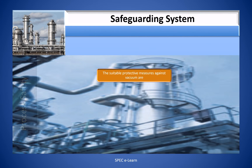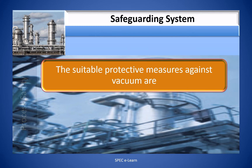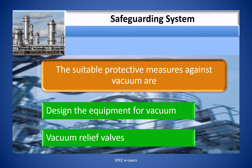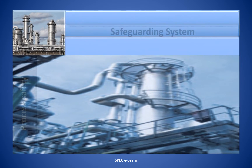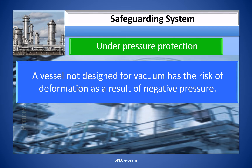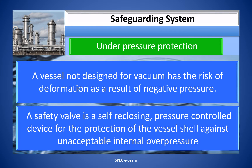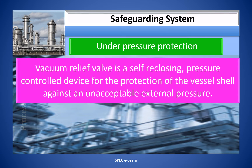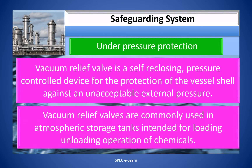Suitable protective measures against vacuum include designing the equipment for vacuum and vacuum relief valves. A vessel not designed for vacuum has the risk of deformation as a result of negative pressure. A safety valve is a self-reclosing pressure control device protecting the vessel shell against unacceptable internal over pressure. A vacuum relief valve is a self-reclosing pressure control device protecting the vessel shell against unacceptable external pressure, and is commonly used in atmospheric storage tanks intended for loading and unloading operations of chemicals.